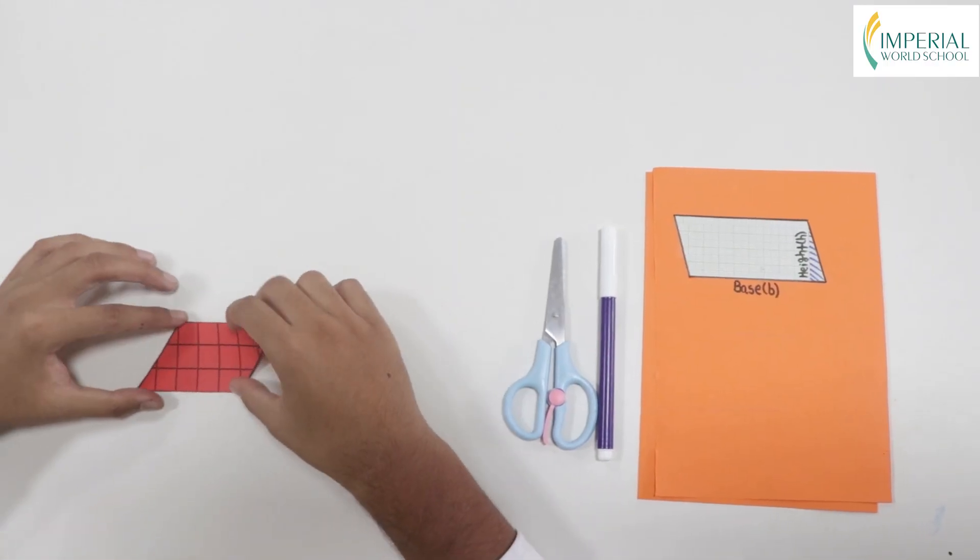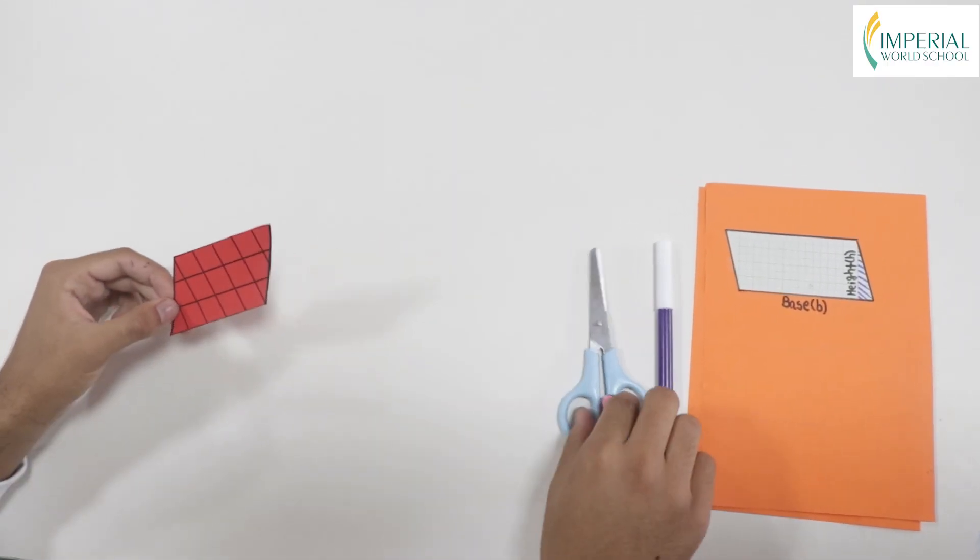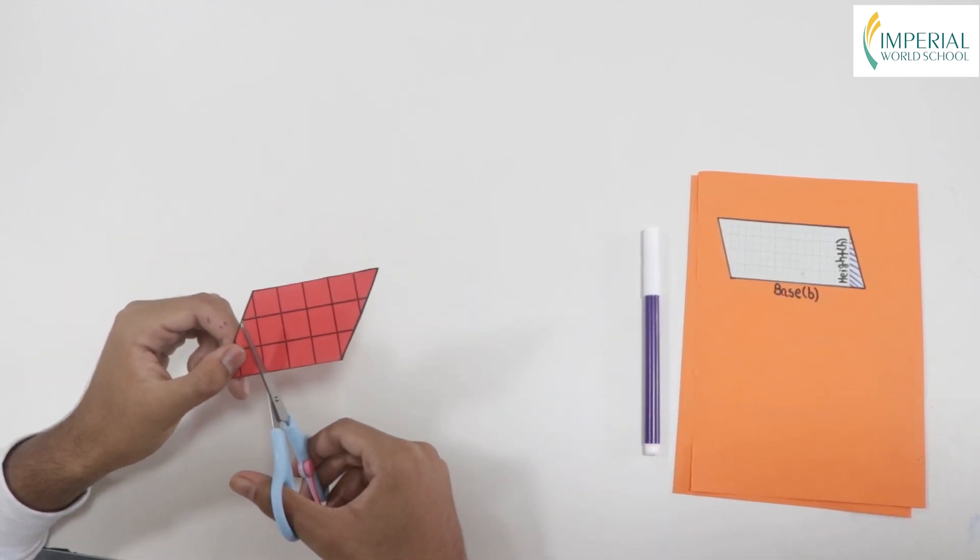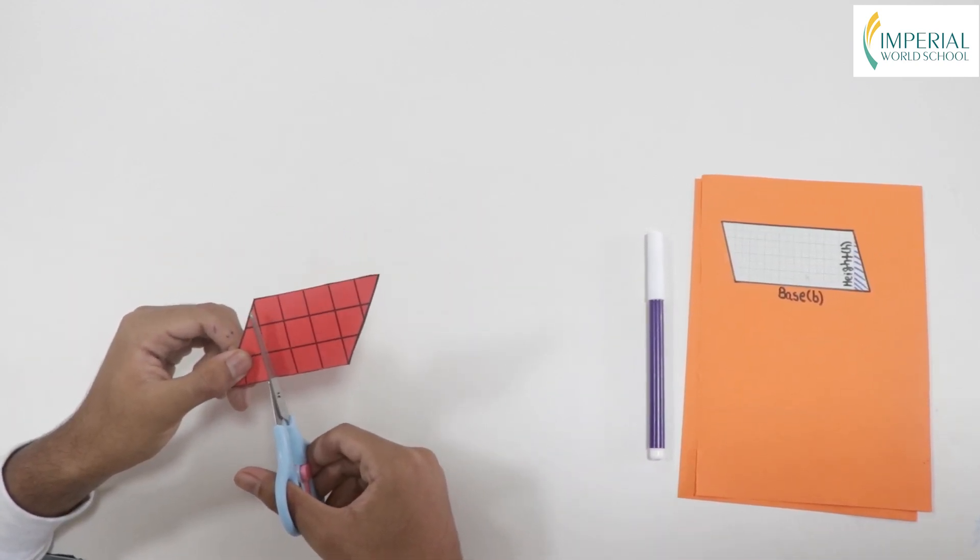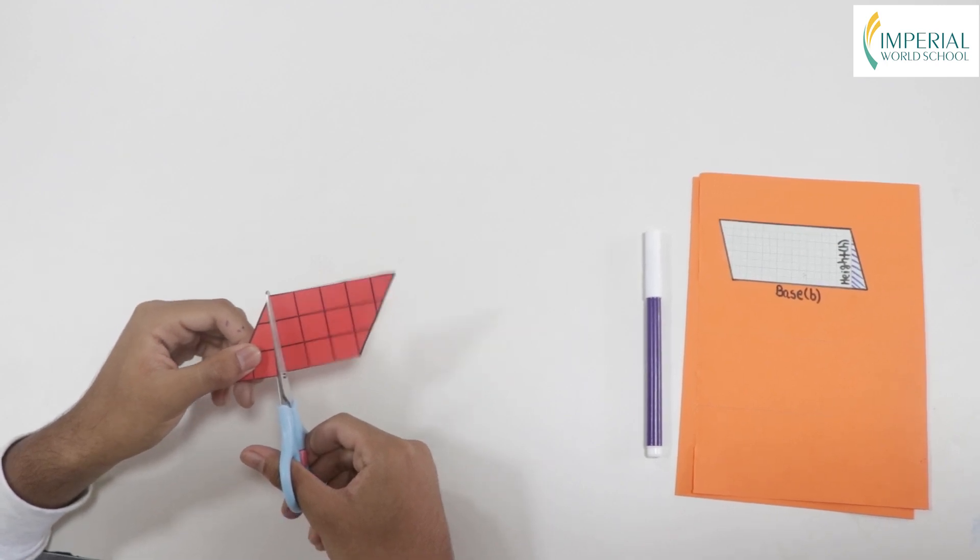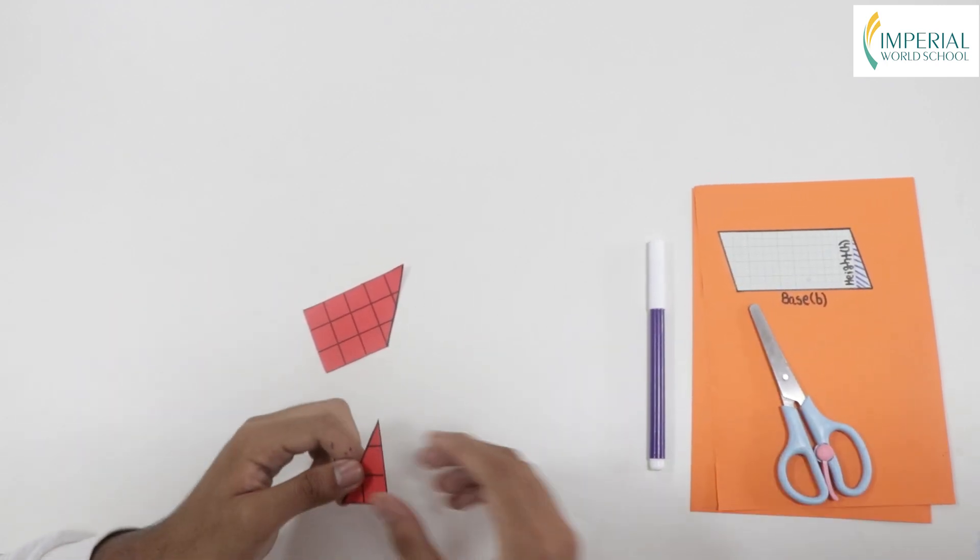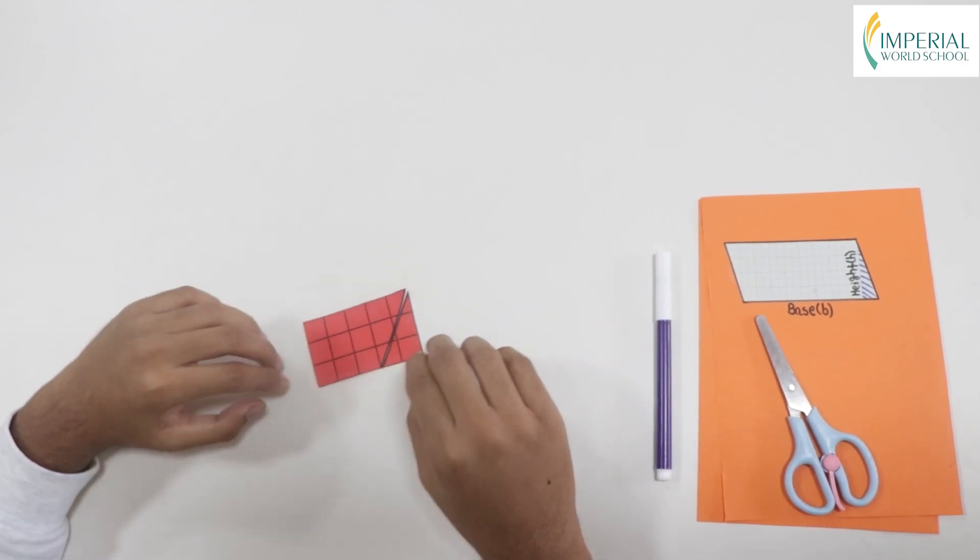Now we have a parallelogram so we cut along its height and place it on the other side turning it into a rectangle.